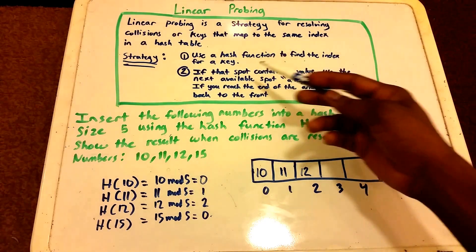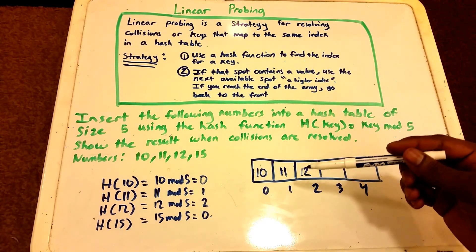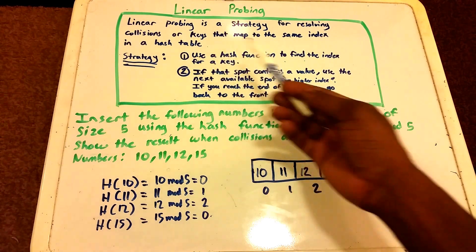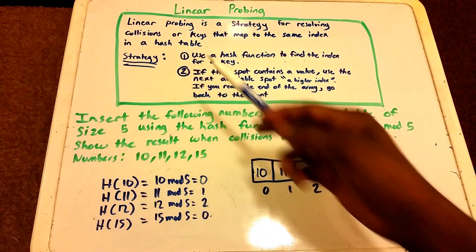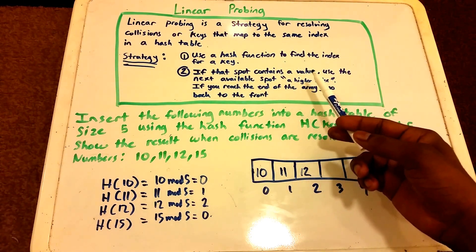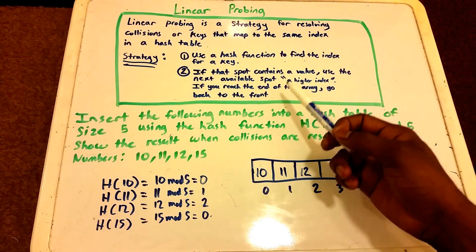So we have to follow this linear probing strategy. It already says use a hash function to find the index for a key, which we have done already. So we go to step 2. It says if that spot contains a value we want to use the next available spot.